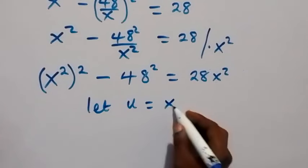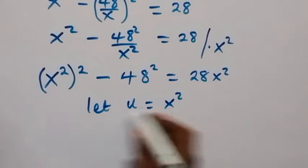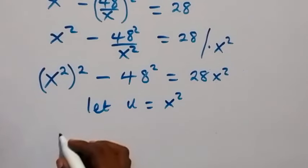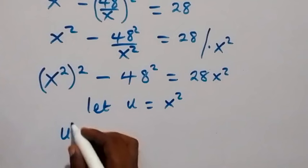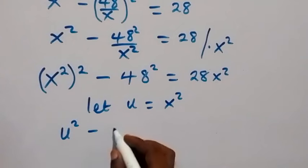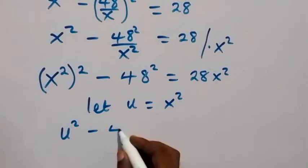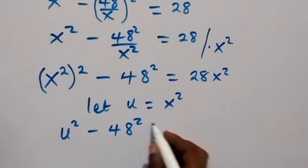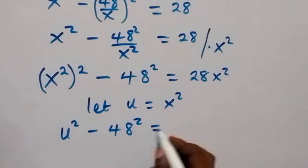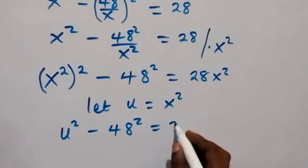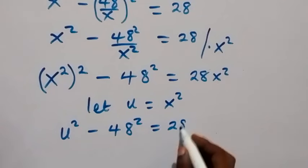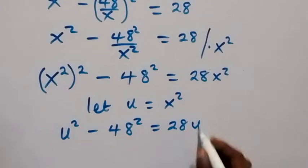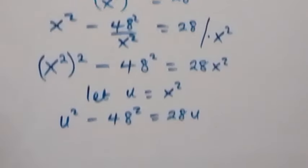Now let u equal x squared. This substitution turns the equation into u squared minus 48 squared equals 28u.